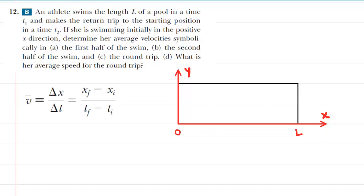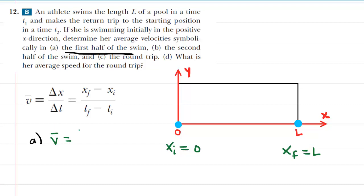In part A, we are calculating the average velocity for the first half of the swim. The swimmer begins at the origin — we've superimposed an X and Y axis on top of the pool, so her initial X position is 0. She swims across the pool, and her final X position is marked L, which simply represents the length of the pool. We take the final position of L, subtract the initial position of 0, and divide by the time interval during which this motion takes place.